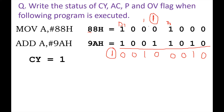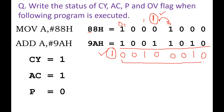So the carry flag is 1 because there is a carry out of the D7 bit. The auxiliary carry flag is also 1 because there is a carry out from D3 to D4. The parity flag is 0 — counting the number of 1s in the accumulator result (the 8-bit result, not counting the carry), there are only two 1s, and 2 is even, so the parity flag becomes 0.